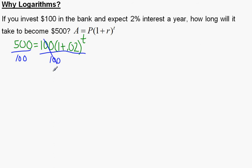So we're going to divide this off. This is going to be 1.02 to the t equals 5. And then what we do here is I'm going to rewrite this as 1.02 to the t equals 5.